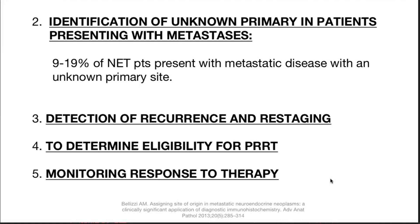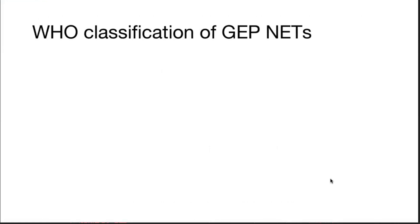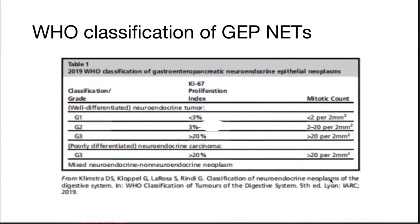The WHO classification — grade 1, 2, and 3 — is based on Ki-67 and mitotic count. Ki-67: less than 3%, 3 to 20%, and more than 20%. Mitotic count: less than 2, 2 to 20, and more than 20 per 10 HPF. Grade 3 is also called poorly differentiated neuroendocrine tumors or neuroendocrine carcinomas.